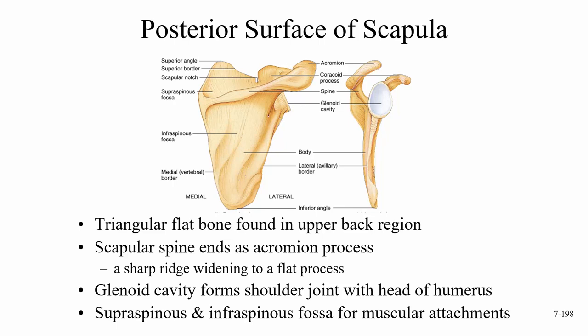We also have the glenoid cavity, which forms the shoulder joint with the head of the humerus. That's why we call this particular joint the glenohumeral joint.